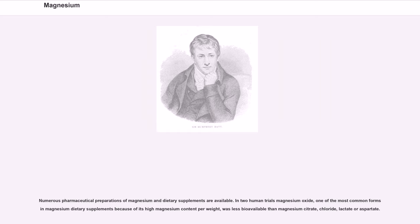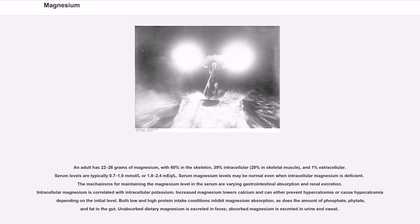Numerous pharmaceutical preparations of magnesium and dietary supplements are available. In two human trials, magnesium oxide, one of the most common forms in magnesium dietary supplements because of its high magnesium content per weight, was less bioavailable than magnesium citrate, chloride, lactate or aspartate. An adult has 22 to 26 grams of magnesium, with 60% in the skeleton, 39% intracellular, 20% in skeletal muscle, and 1% extracellular. Serum levels are typically 0.7 to 1.0 mmol/L or 1.8 to 2.4 mEq/L. Serum magnesium levels may be normal even when intracellular magnesium is deficient. The mechanisms for maintaining the magnesium level in the serum are varying gastrointestinal absorption and renal excretion. Intracellular magnesium is correlated with intracellular potassium.